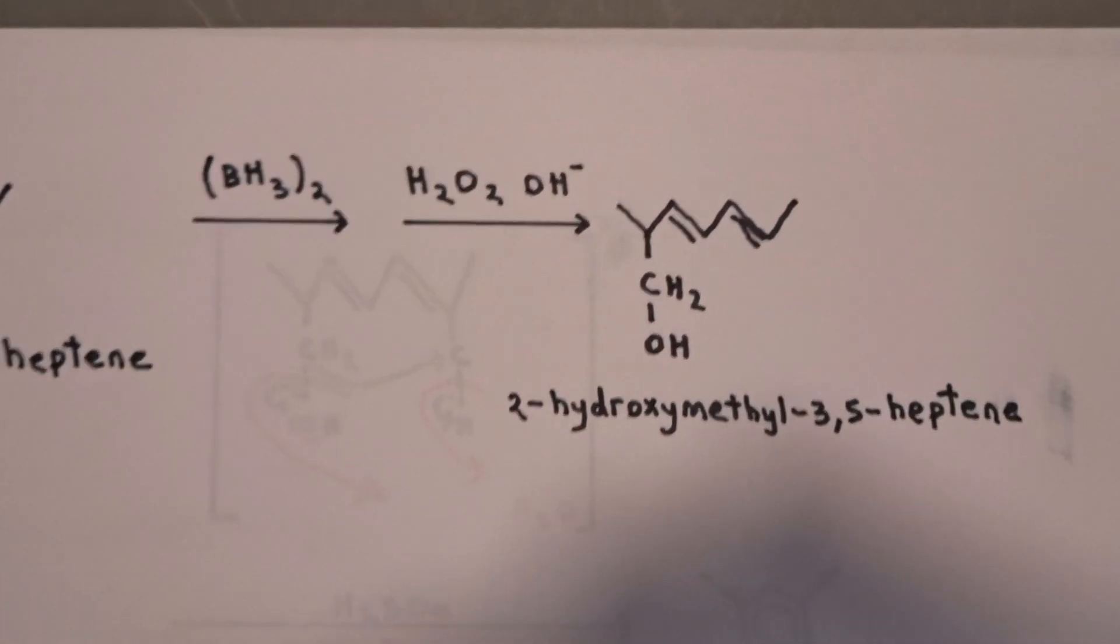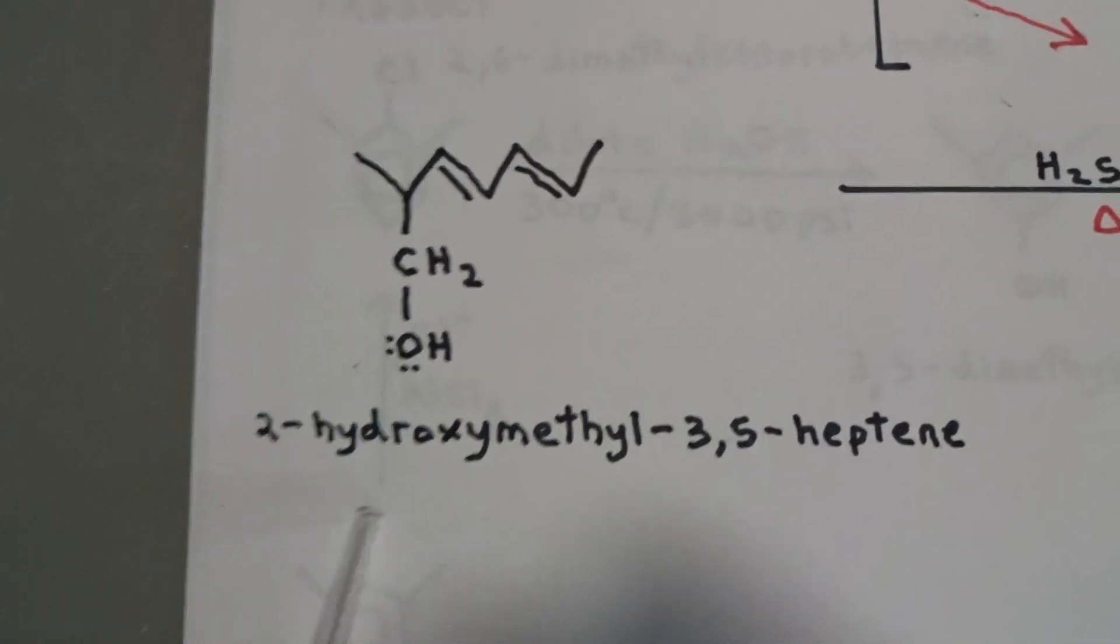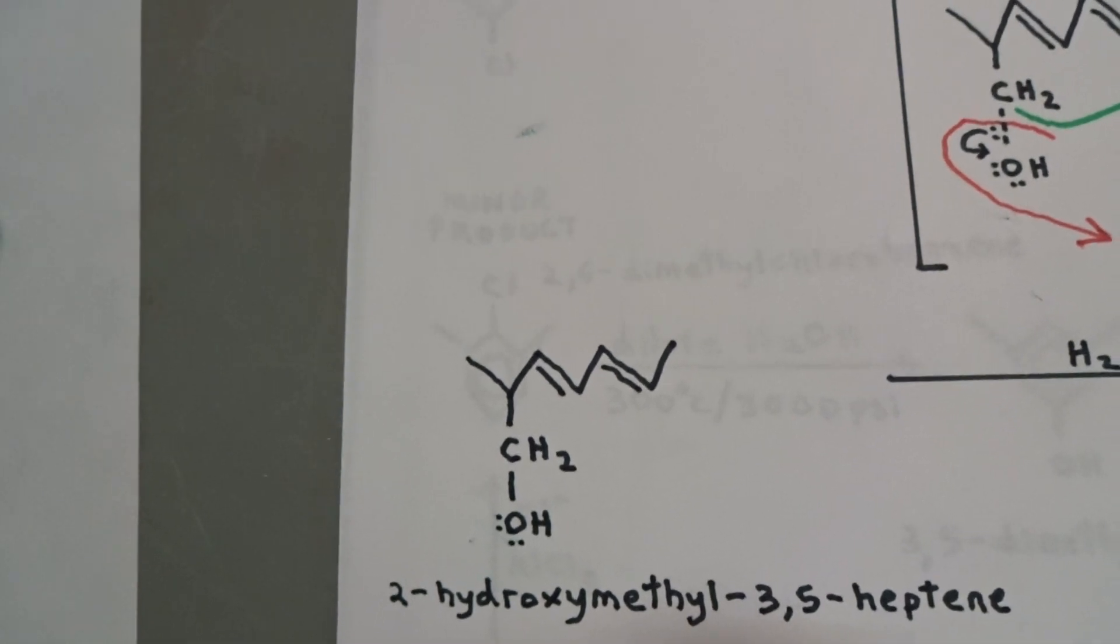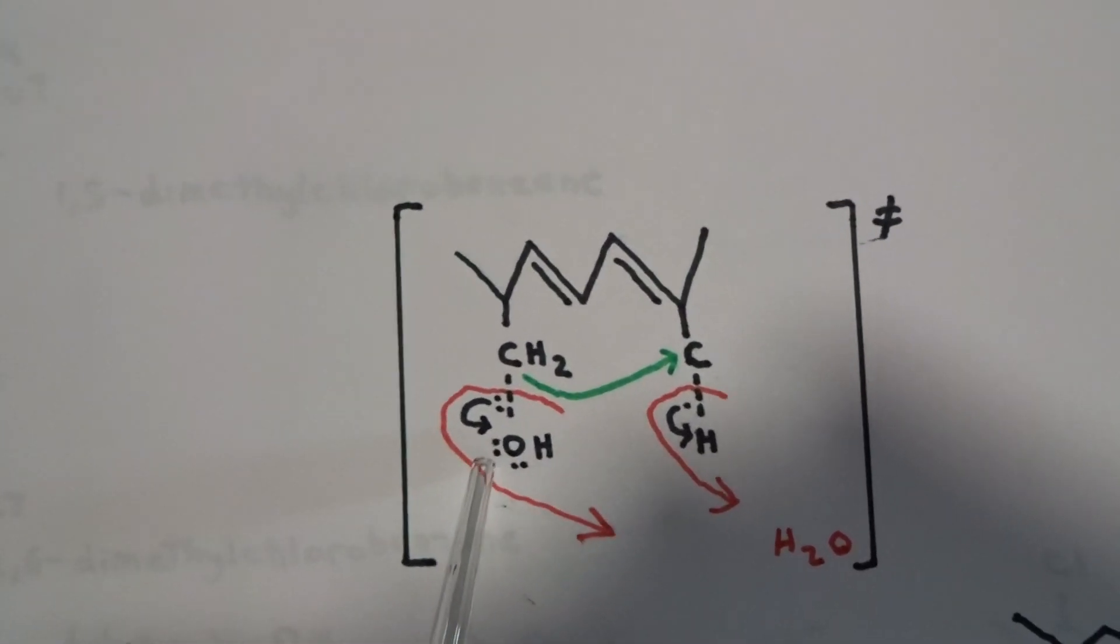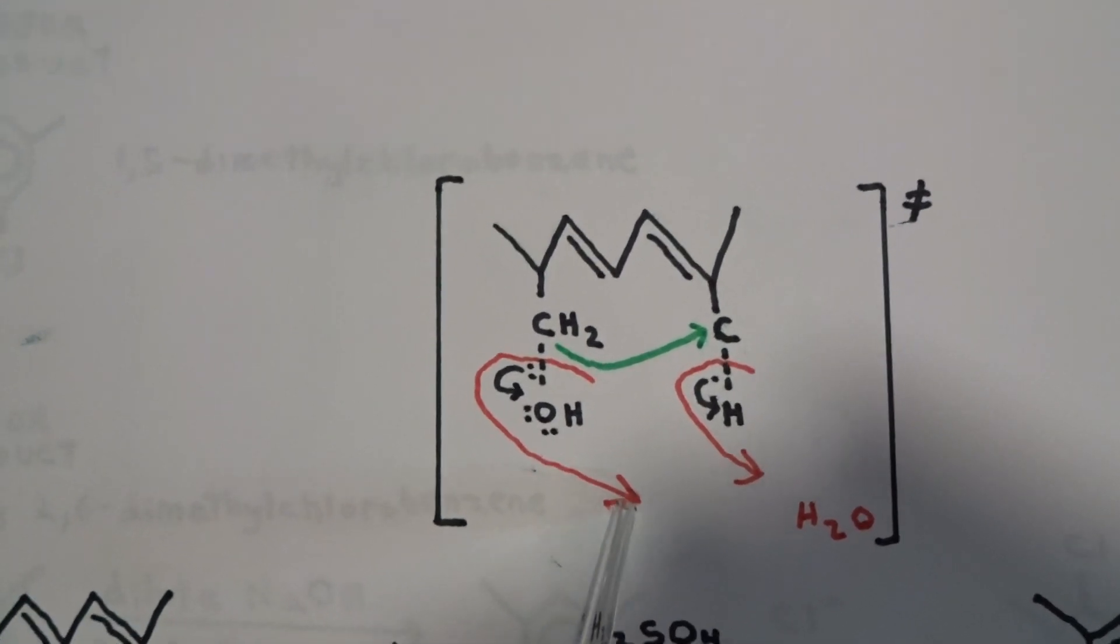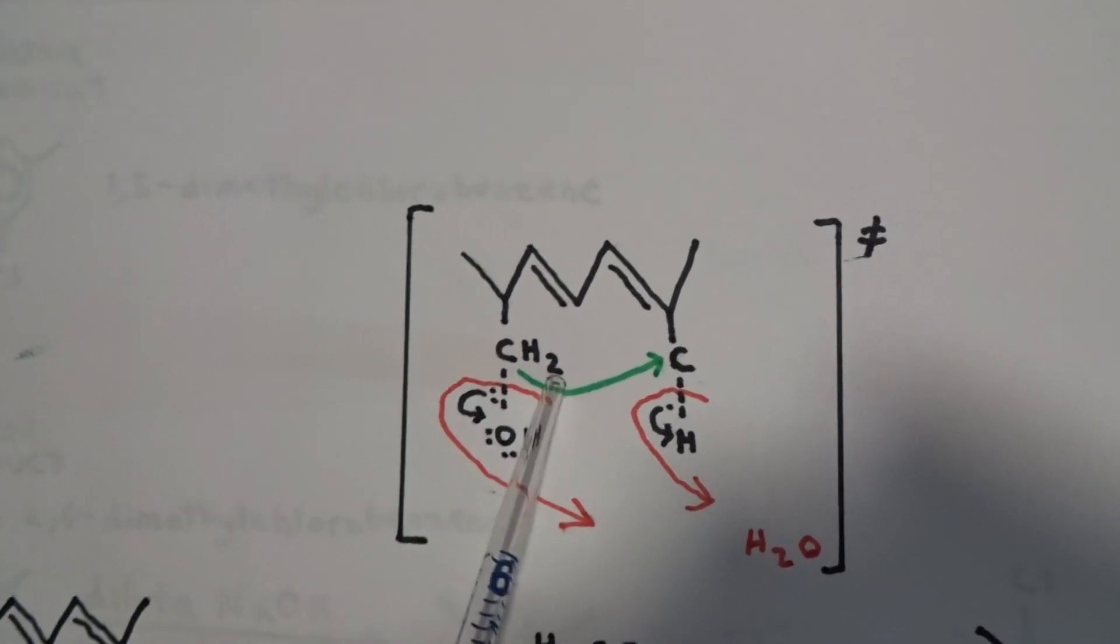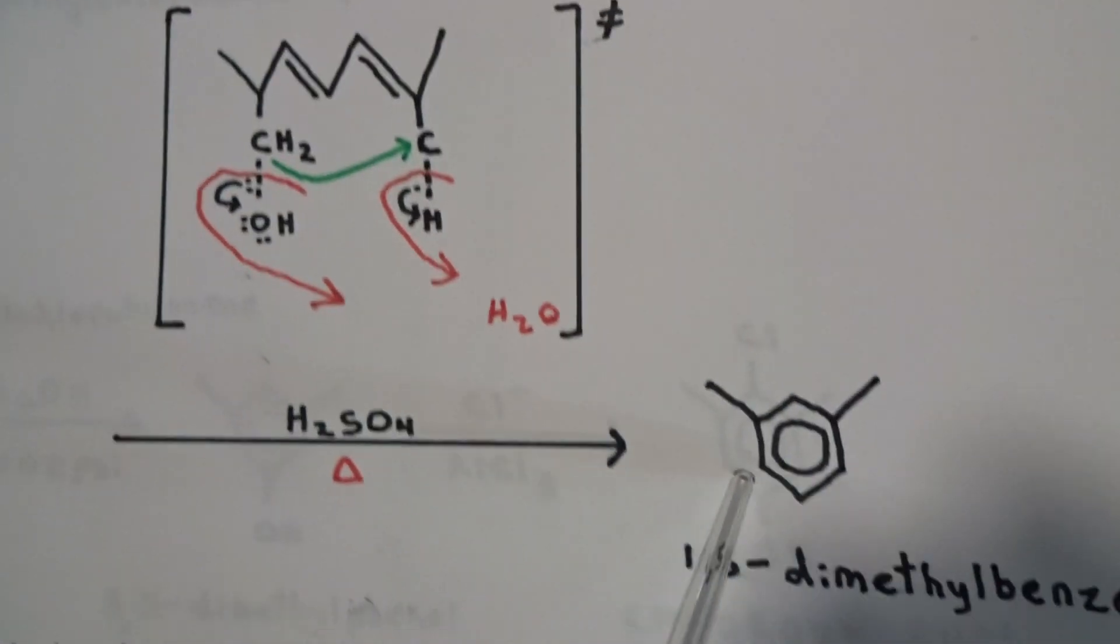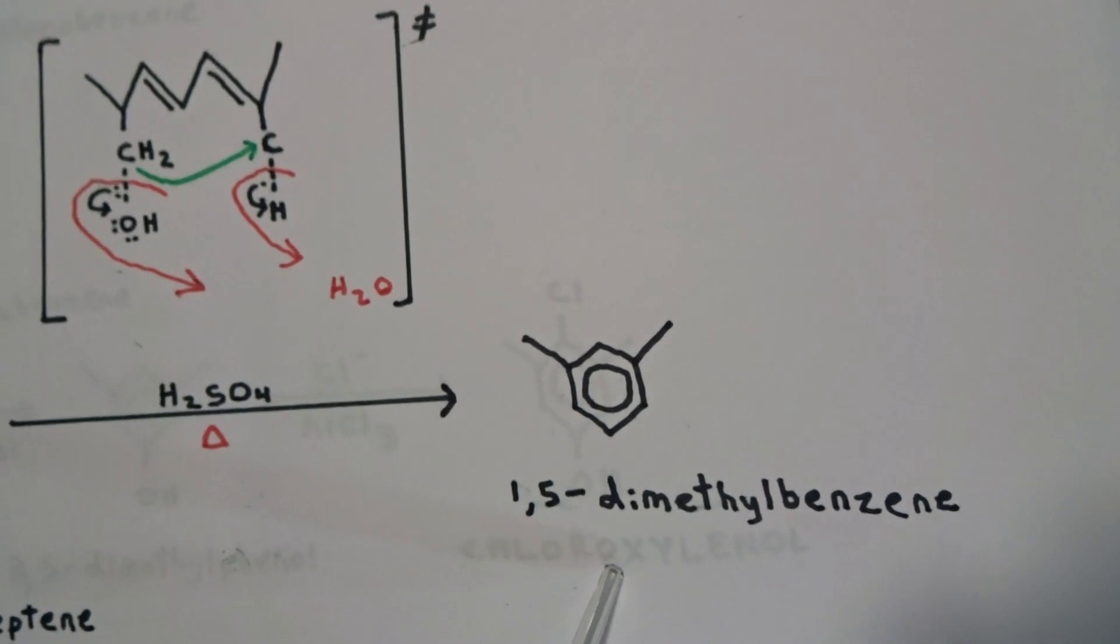What we'll want to do is yield this product. Because in this product, we will find, starting with 2-hydroxymethyl-3,5-heptene, this molecule, will, in the presence of dehydration with heat, in the transition state, we'll see that the hydroxyl group in dehydration is removed, as well as a hydrogen. And this green arrow indicates ring closure. These two carbons will join together and form a bond to yield the aromatic benzene structure with the 2-methyl groups at the end for 1,5-dimethylbenzene.